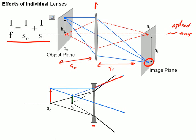Rather, they appear to come together on the same side of the lens as the object was. They appear to come together here.